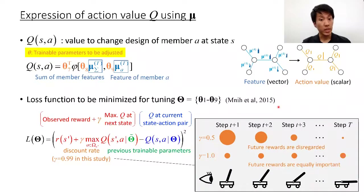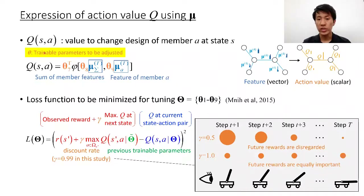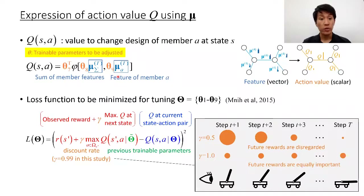The next step is converting mu into Q values. In the field of reinforcement learning, the meaning of Q is an expected future reward by taking an action in the current state. In other words, if Q is large, take the action because more rewards are expected. This is the formulation of converting mu into Q values. Here we further introduce trainable parameters theta 7 to theta 9, so Q is a function of theta 1 to theta 9.